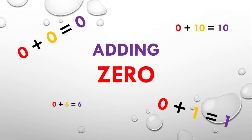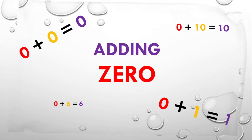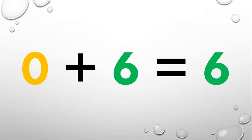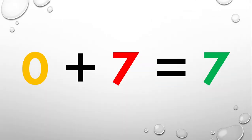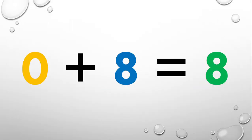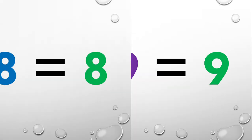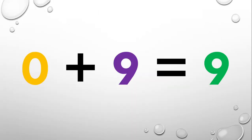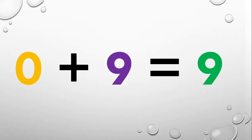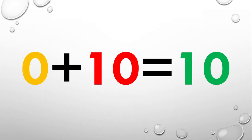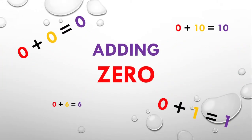Now there are more math facts that involve adding with zero, and they include: zero plus six equals six, zero plus seven equals seven, zero plus eight equals eight, zero plus nine equals nine, and zero plus ten equals ten.